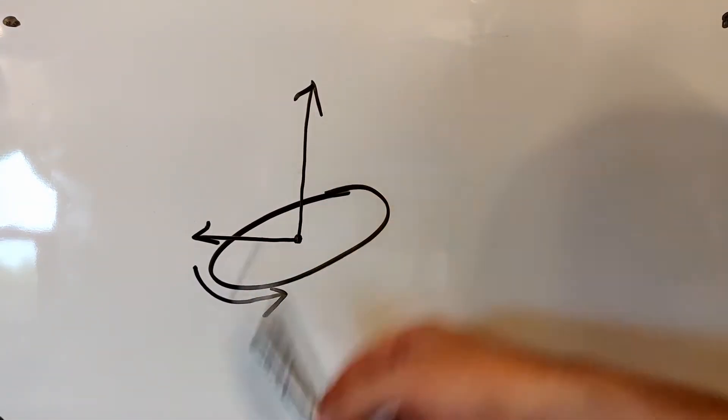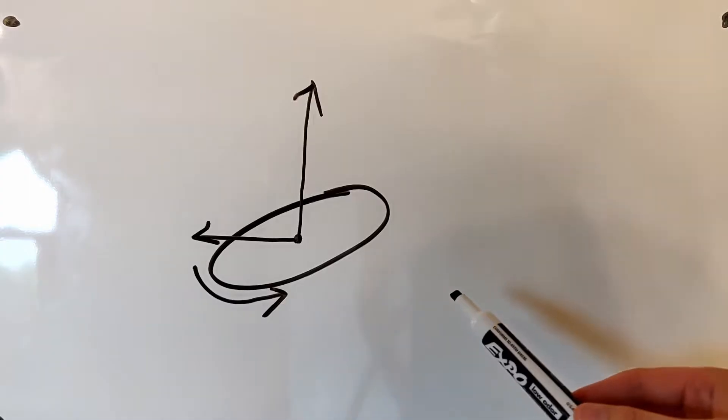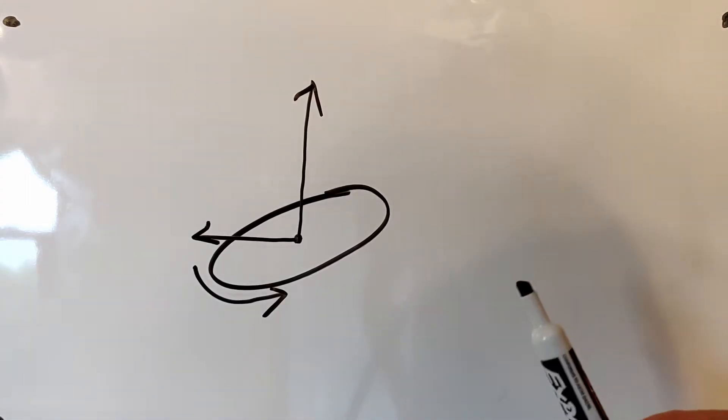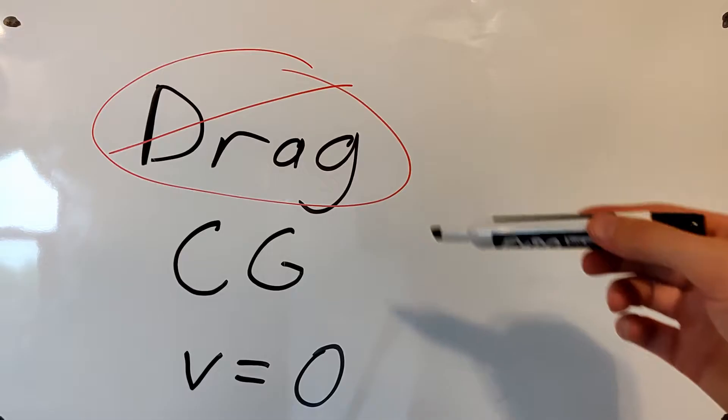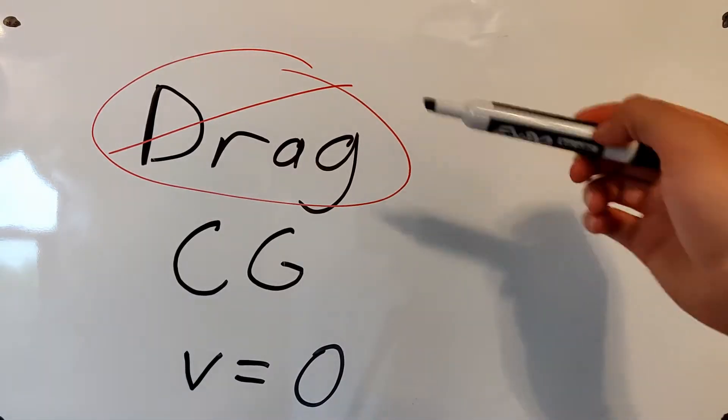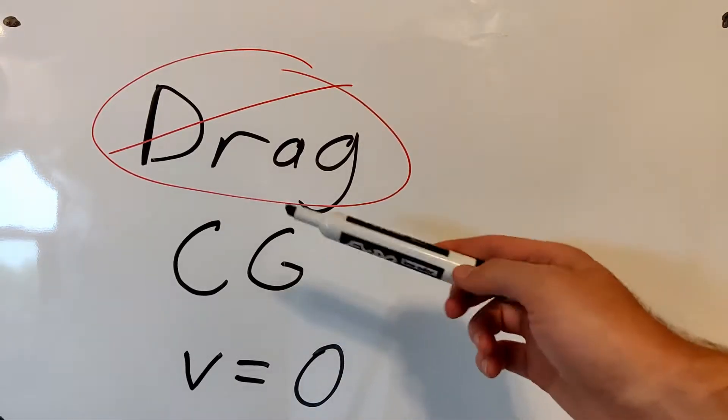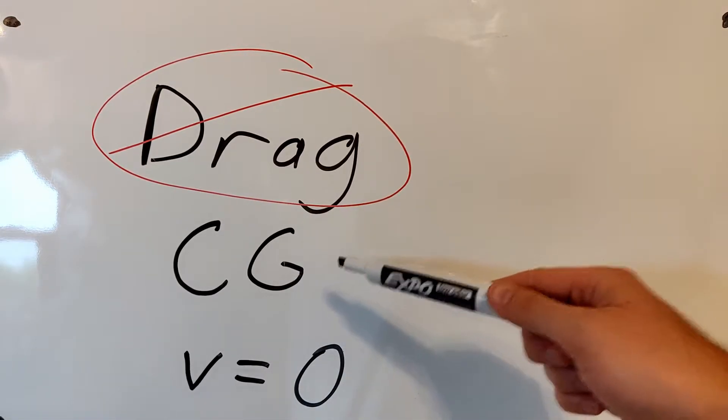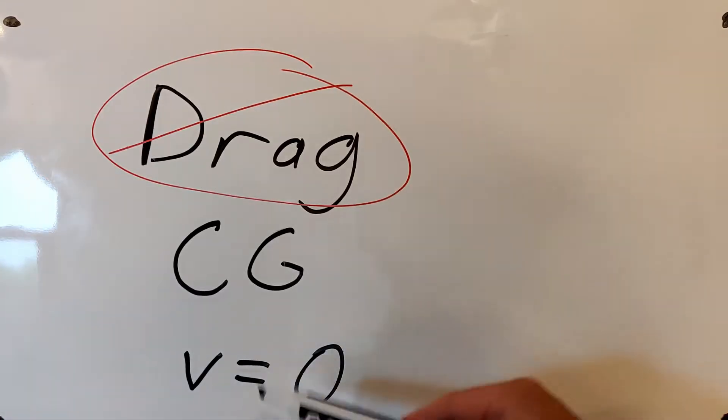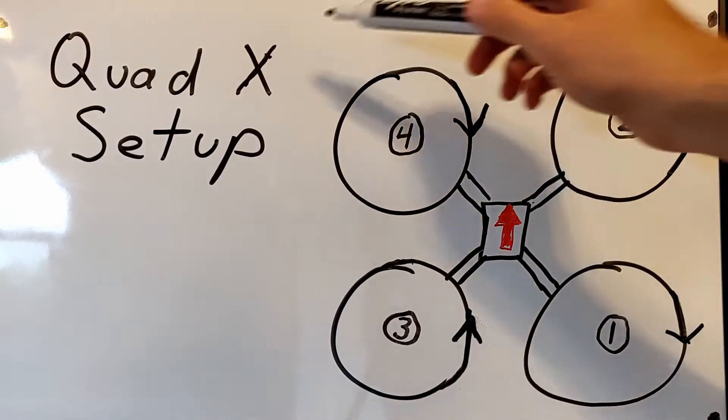Thrust, lift, and torque are all generated by spinning rotors. More RPMs create more thrust and torque for each rotor. For simplicity, we are going to be ignoring drag. We're going to assume that the center of gravity, CG, is centered on the craft. And we're going to assume that the quad is not moving at the start of all maneuvers or the velocity equals zero. This is our quad X setup.